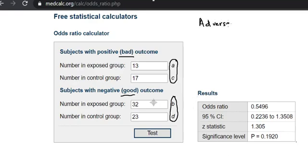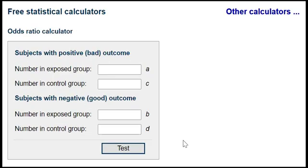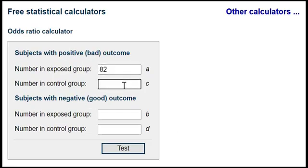If you like acronyms you can use this one: Adverse cases twice daily, and medically speaking twice daily is BD. So let's just try another example in this calculator to see what we get.